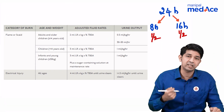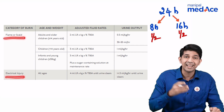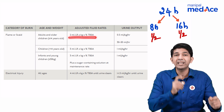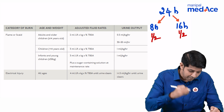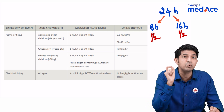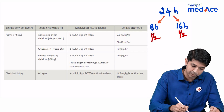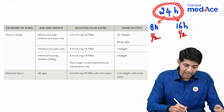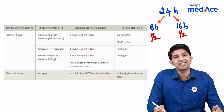For resuscitation, first determine whether it's a regular burn or an electrical burn. For a regular burn, use the formula: 2 × kg body weight × percentage of body surface area burnt. For electrical injury, double it — 4 × kg body weight × percentage of body surface area burnt. Whatever total you get is for 24 hours: half should be given in the first 8 hours and the other half in the next 16 hours.